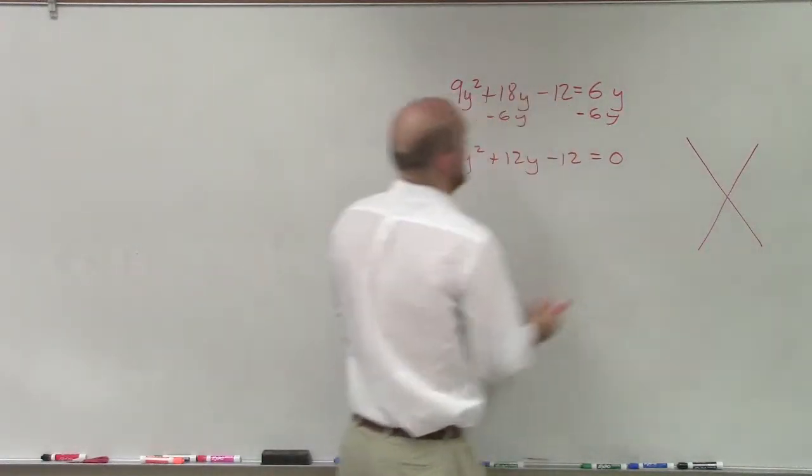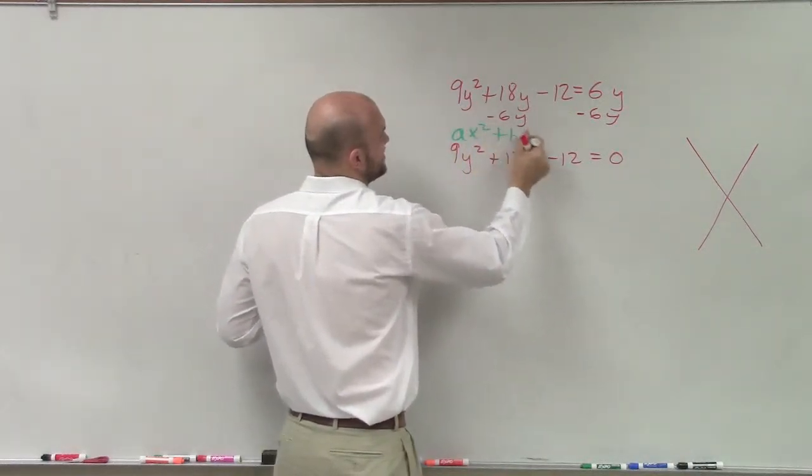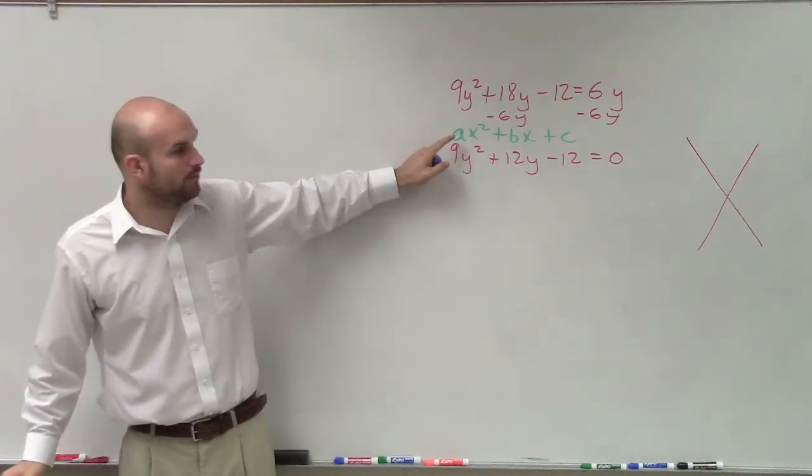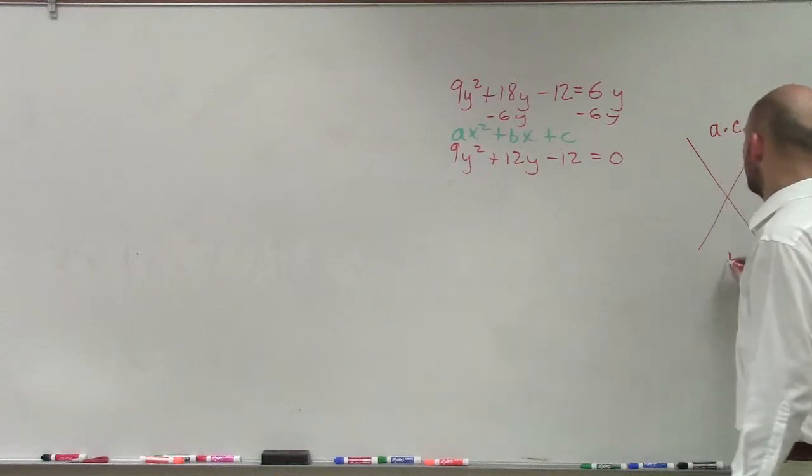Again, when we have a quadratic in the form of ax² + bx + c, where we have a value of a other than 1, we do a times c up top and then b on the bottom.